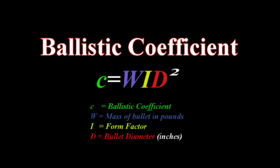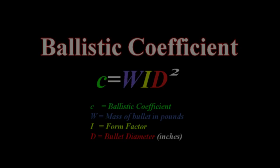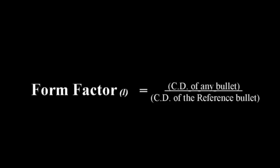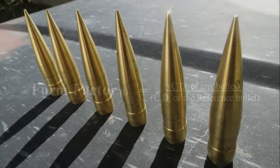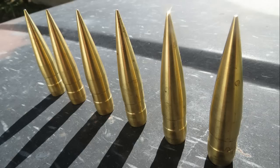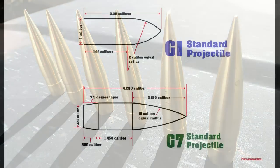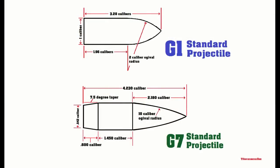A form factor is just a multiplier which relates the shape of a bullet to the shape of the standard projectile used to prepare a particular ballistic table. Mathematically speaking, the form factor — also known as the coefficient of retardation, which is how fast your bullet is going to slow down — equals the coefficient of drag of any bullet you're looking at divided by the coefficient of drag of the defined G-function standard bullet. So what is this standard bullet?